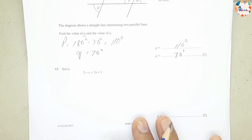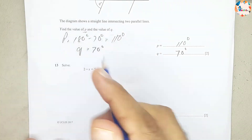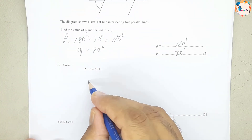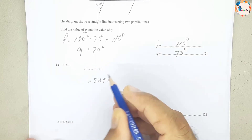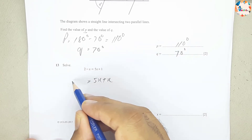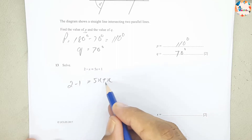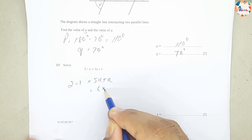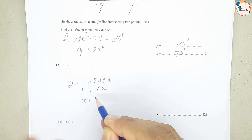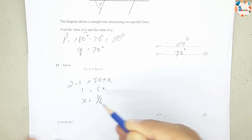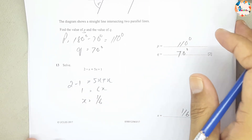Question number 13: solve the equation. Moving −x to the other side gives 5x + x = 6x, and shifting 1 gives 2 − 1 = 1. So 6x = 1, therefore x = 1/6.